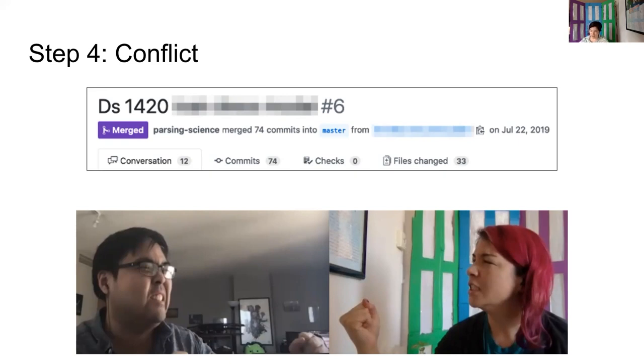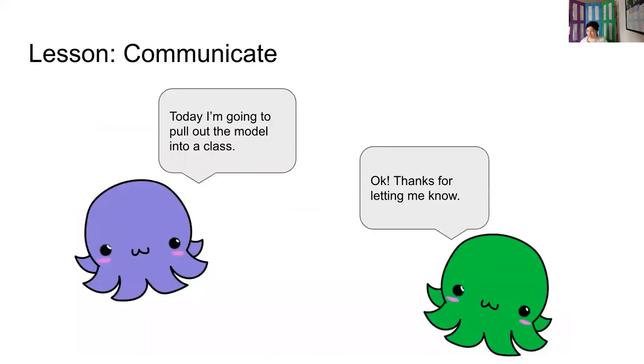So that brought us to our first lesson, which was that it's super important to communicate with somebody, especially if you're going to change their entire library. Nobody likes coming back to a pull request with 33 files. Had I gone to Michael earlier and explained what I was trying to do, he wouldn't have felt as blindsided when I came back with all these changes. And since he knew the code base a lot better, I'm sure he could have given me a lot of tips along the way as I was refactoring the code.